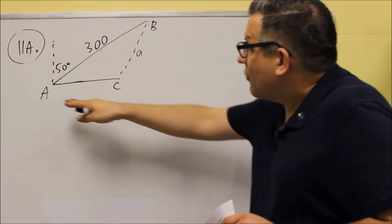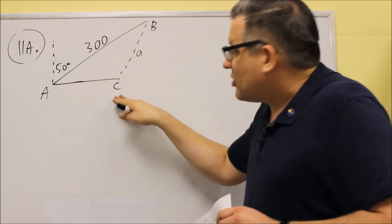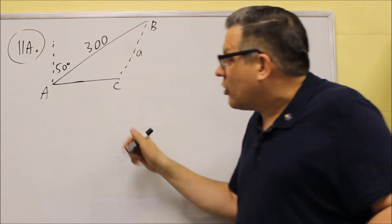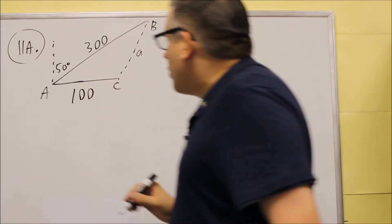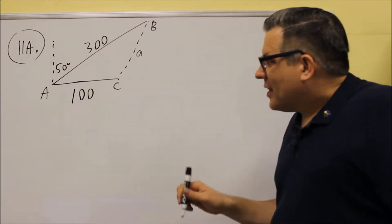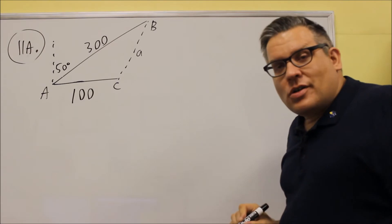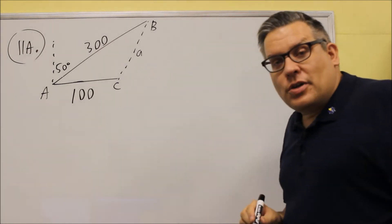So it says a pilot that's trying to fly from A to B mistakenly flies east for 100 miles. So we're going to put 100 miles down there. Then the pilot corrects the error and then flies on the right bearing to B.